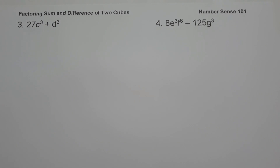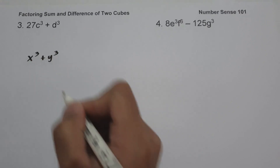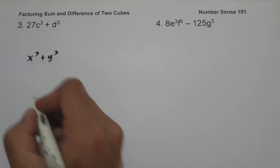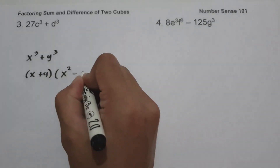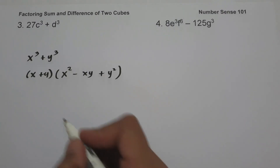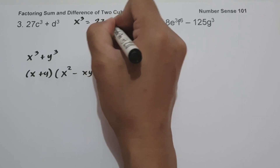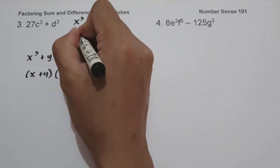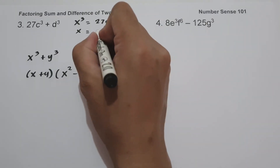On example number three, we have 27c³ + d³. As you can see, this is written in the form of x³ + y³, and x³ + y³ = (x + y)(x² − xy + y²). So let us identify x³, which is the first term, 27c³. To find the value of x, the cube root of 27c³ is 3c.